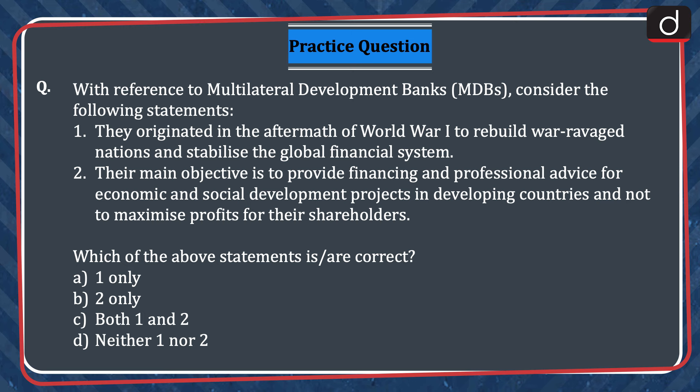Now it's time for a practice question. With reference to multilateral development banks, consider the following statements. 1. They originated in the aftermath of World War I to rebuild war-ravaged nations and stabilize the global financial system. 2. The main objective is to provide financing and professional advice for economic and social development projects in developing countries, and not to maximize profits for their shareholders. Which of the above statements is or are correct? Only 1, only 2, both 1 and 2, or neither 1 nor 2? Send your answer in the comment section. Stay tuned for the next episode. Thanks for watching.